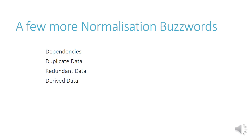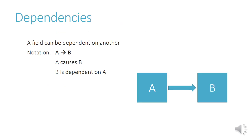The buzzwords are: dependencies, duplicate data, redundant data, and derived data. Dependencies is when one field is dependent on another. The notation used is A with an arrow pointing to B. This means that A causes B, but we say that B is dependent on A. So the one the arrow is pointing to is the one that is dependent on the other one.